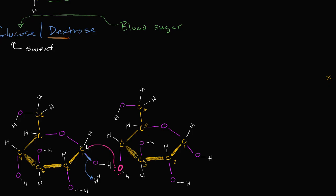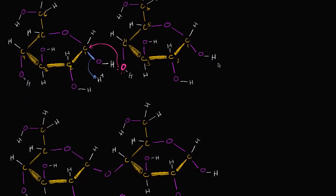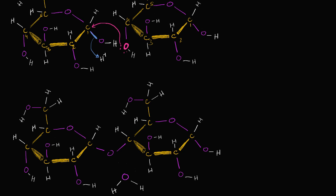This links the two glucose molecules together. The oxygen that performed the attack is now bridging them — bonded to the number four carbon on the right-hand molecule through one bond, and forming a new bond with the number one carbon on the left-hand molecule. The electron pair also forms a bond with a hydrogen ion. So tracking the atoms: this oxygen is now that bridging oxygen, and the bond with the number one carbon is the new bond formed from the lone pair.